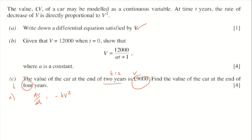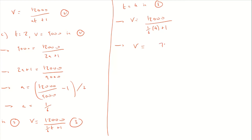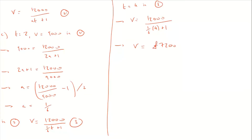Find the value of the car at the end of four years: substitute t = 4 into equation three. v equals 12000 over (one sixth times four plus one), which equals 12000 over (2/3 + 1) = 12000 over 5/3, giving 7200 pounds. The main task is done — all questions follow a similar pattern; the hardest part is the algebra to get the equation into the required form.